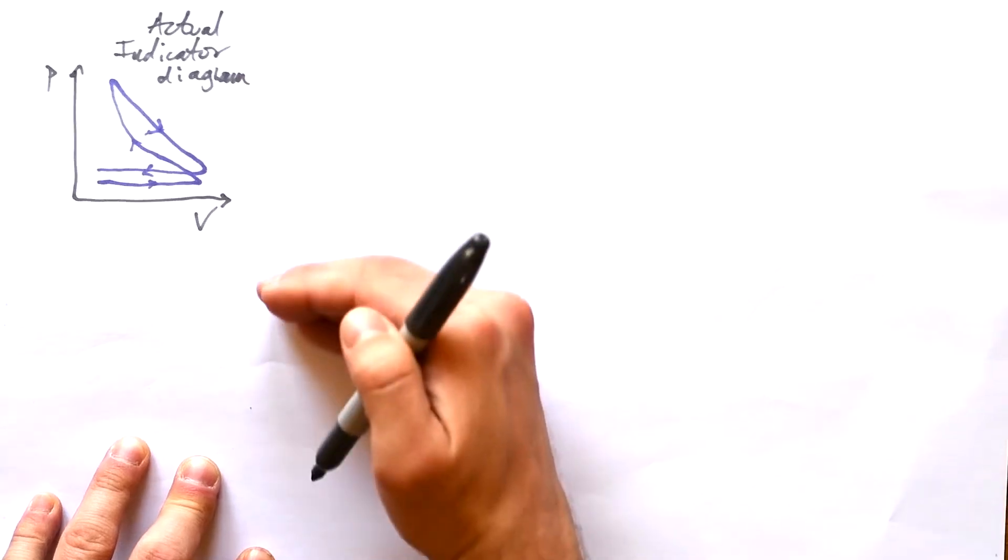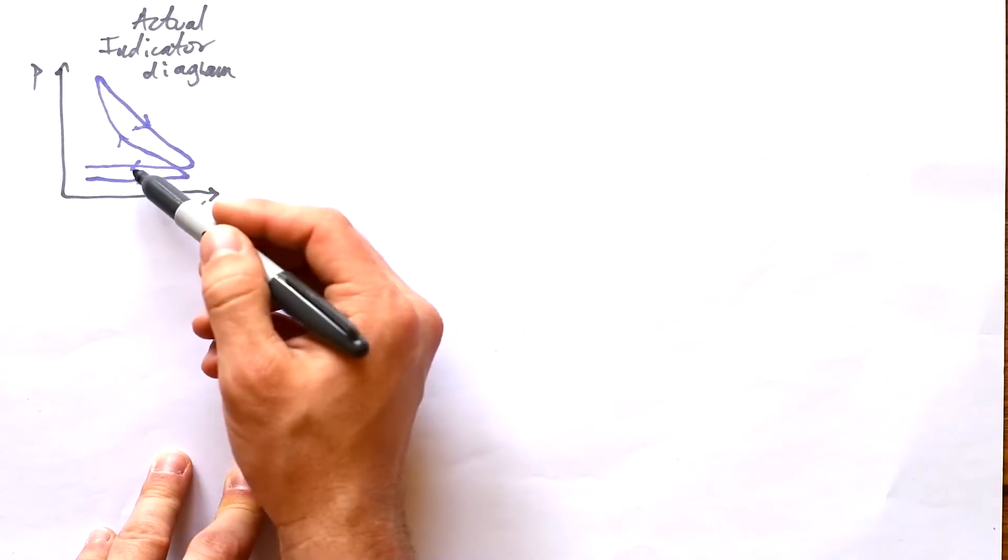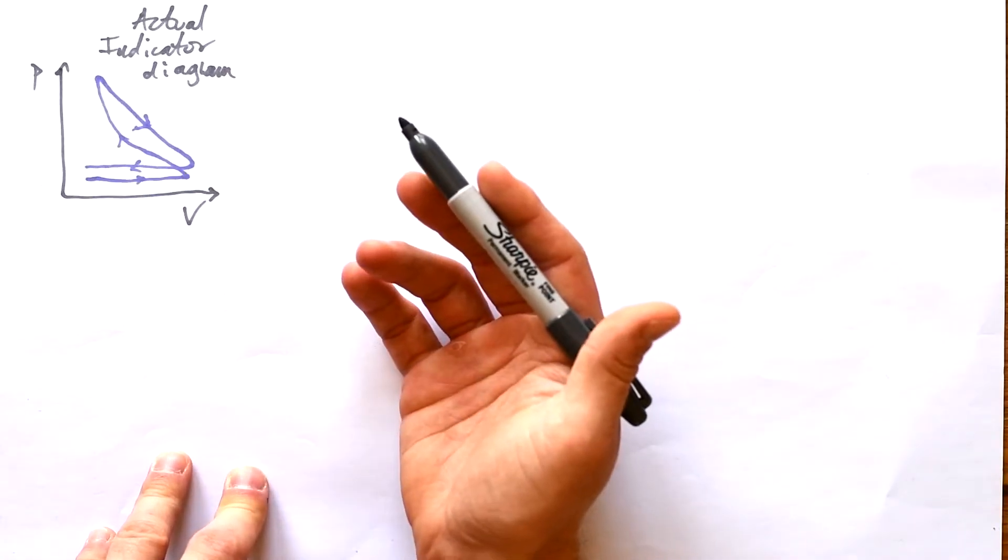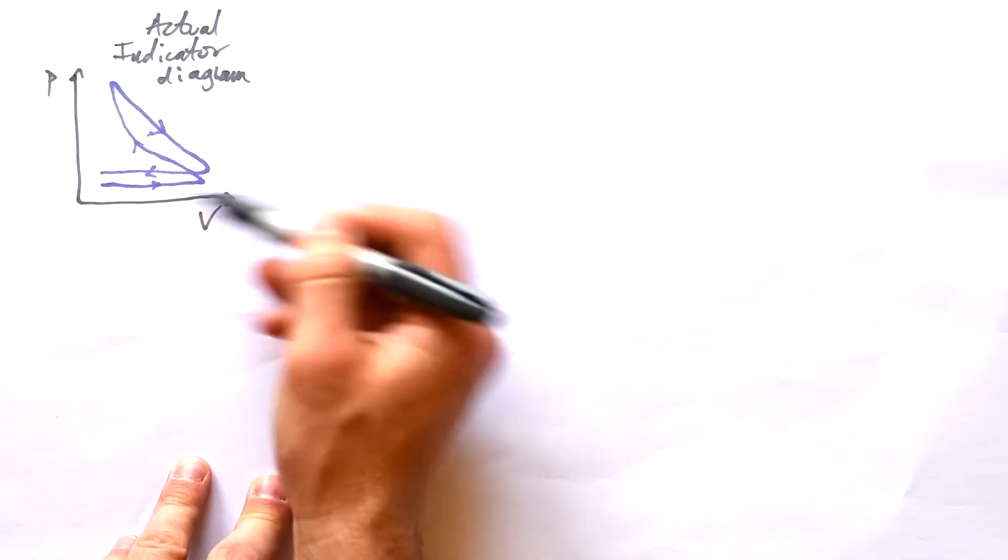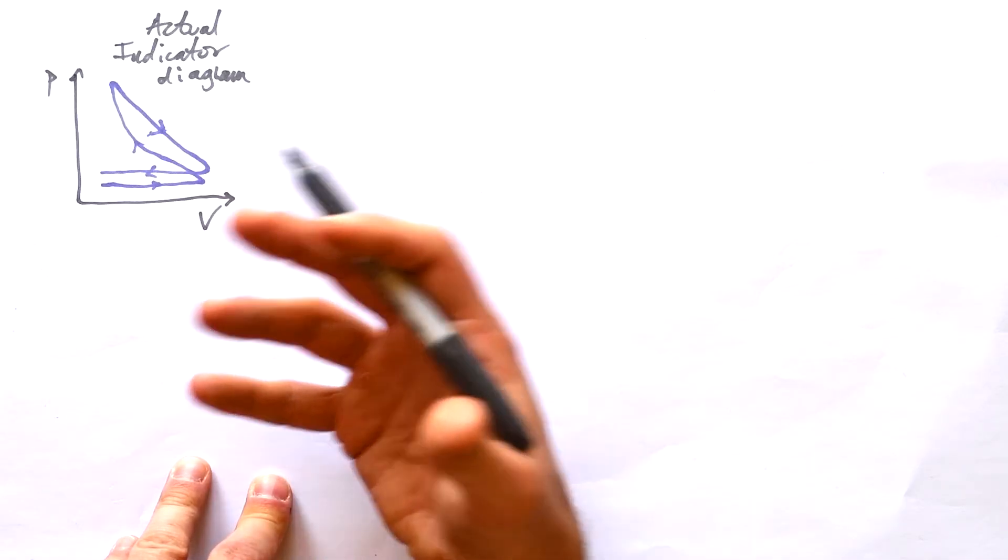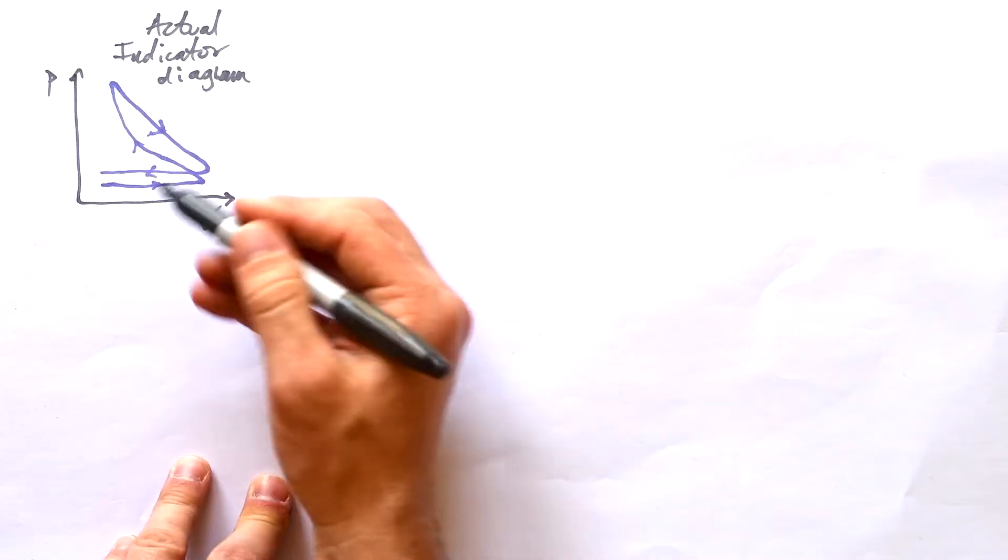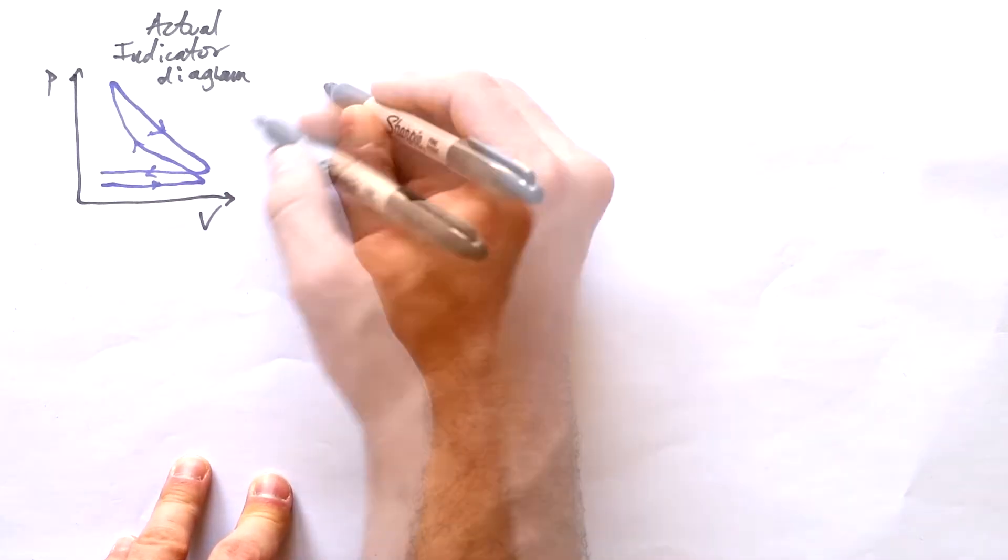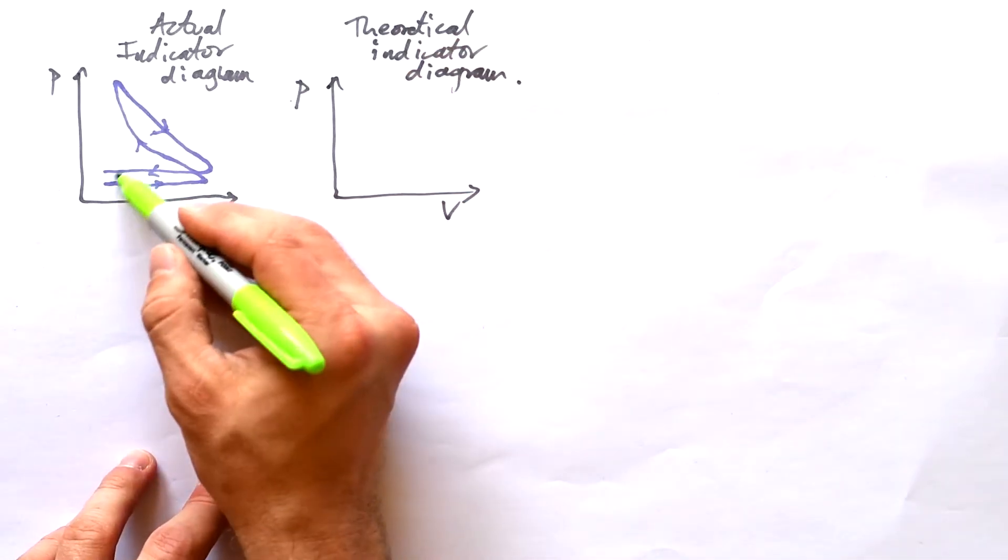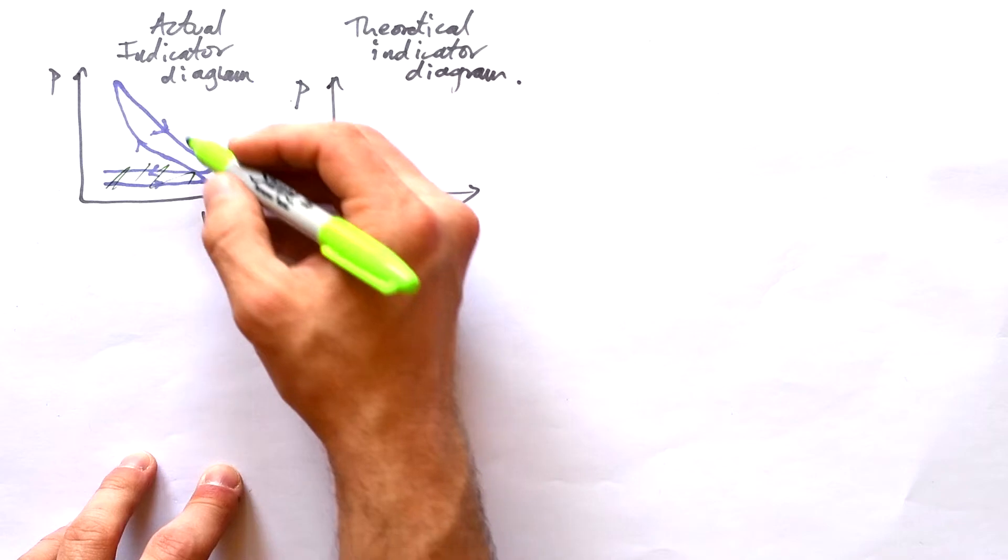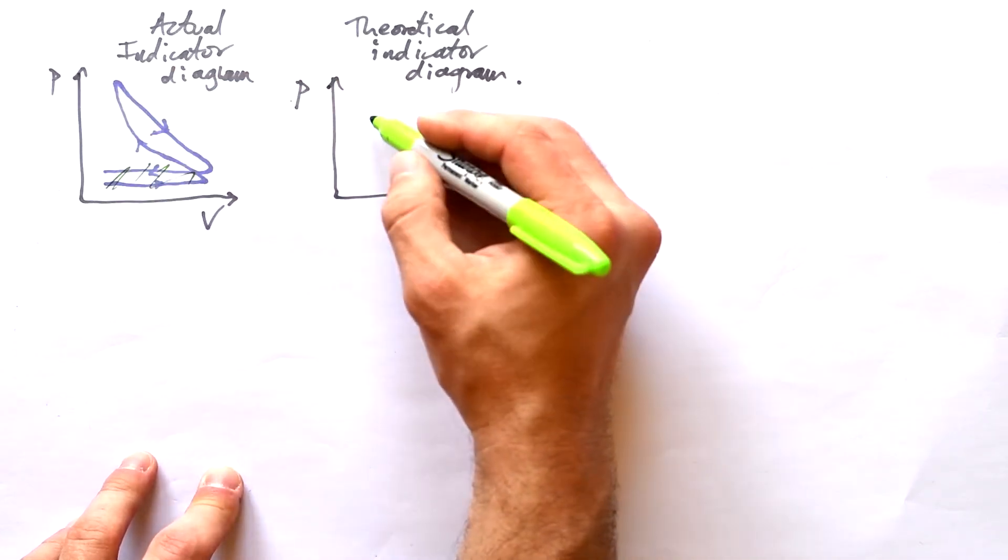Now we can call this an indicator diagram and this is a real or actual indicator diagram of what's going on inside a four stroke engine. The reason that it's not a complete loop is because we're not using the same gas every time. We're bringing in some air and fuel and then sending it back out once it's combusted, and then we bring another lot in. If we were, however, to draw a theoretical indicator diagram, we sort of take off this bit here and just deal with the expansion and compression.